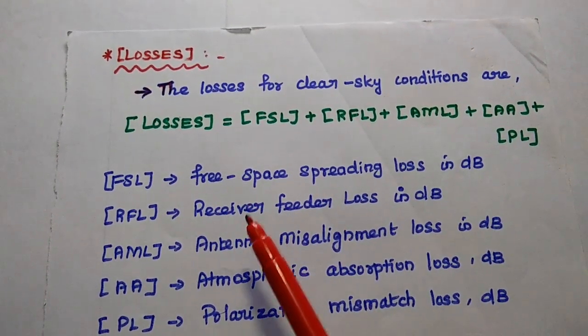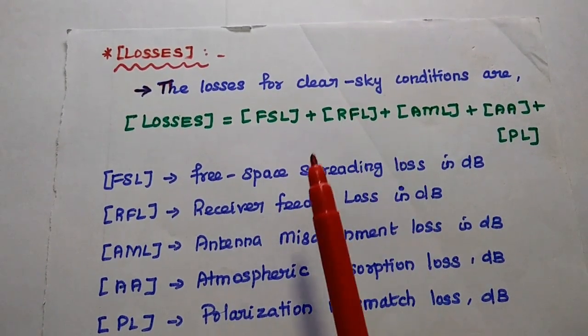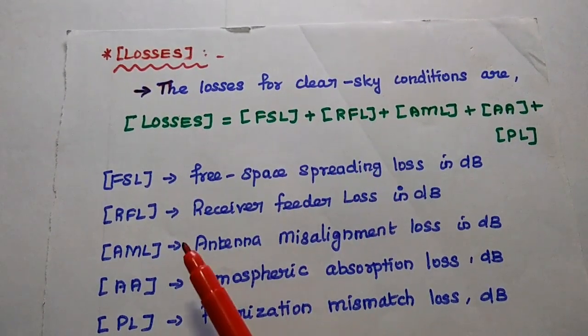So these all are the losses present in the satellite link for clear sky conditions. These losses should be subtracted to get the proper received power.